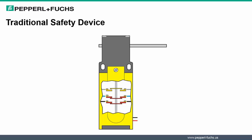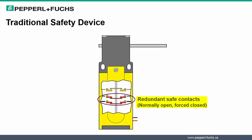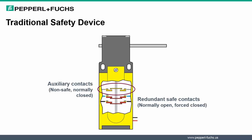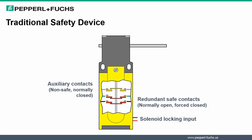Let's look back at a traditional safety device. Traditional safety devices were made up of a number of components. First, redundant safety contacts. Second, auxiliary contacts used to help determine the device's state. And third, solenoid locking inputs. All these three components made up a traditional safety device.